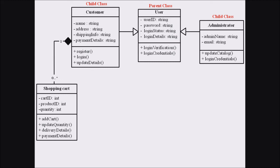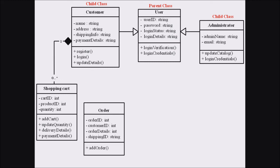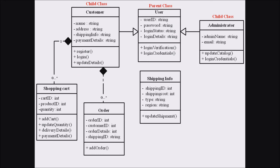Now we are dealing with another class, Order. The Order class also has methods and attributes, and it is related to the Customer class with a composition relationship. The multiplicity here is: one customer has zero to many orders. Next, Shipping Information is related to the Order class, also with a composition relationship — Shipping Information is a composition of the Order class. One Order class has one Shipping Information.